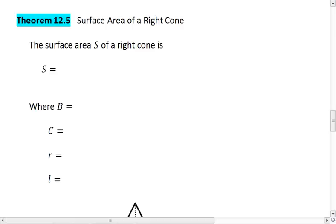Theorem 12.5 is the surface area of a right cone. The fact that it's a right cone merely means that when I drop this height down from the vertex, it creates a right angle with my base, that it's in the center of this circle.